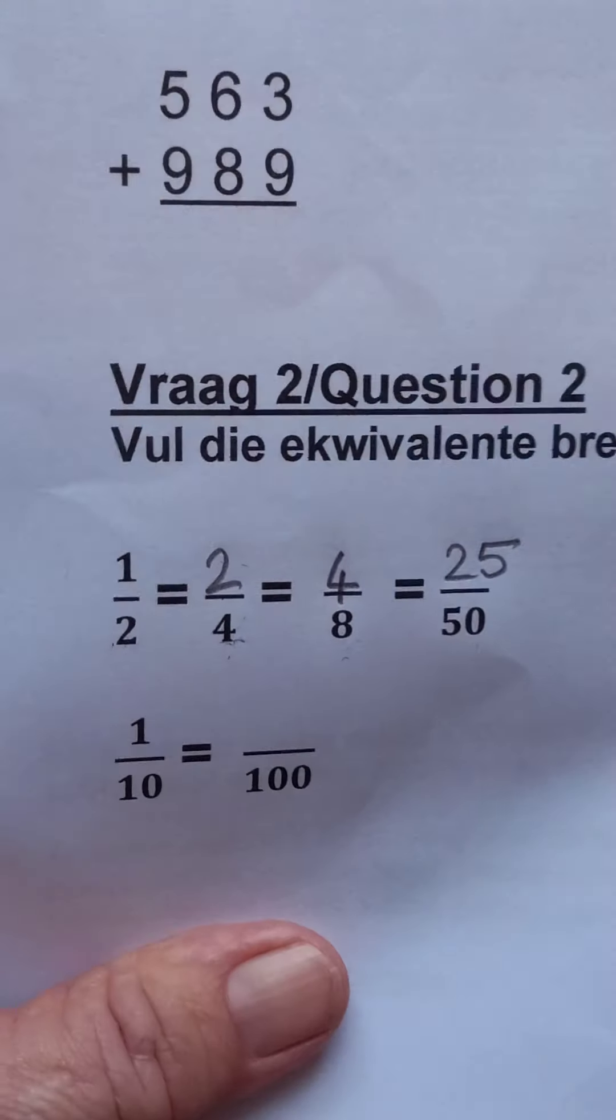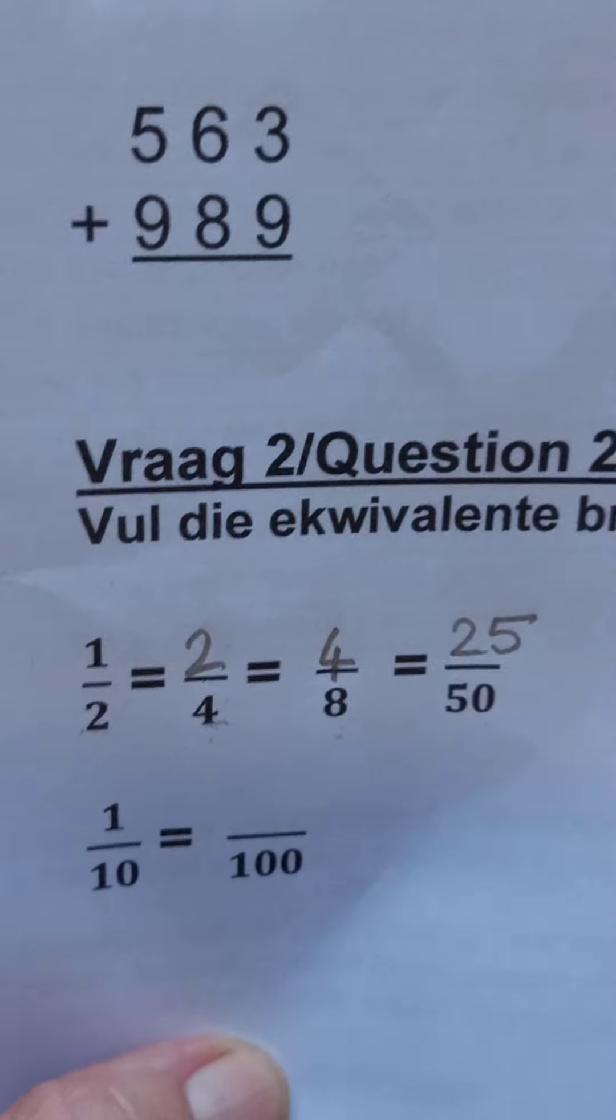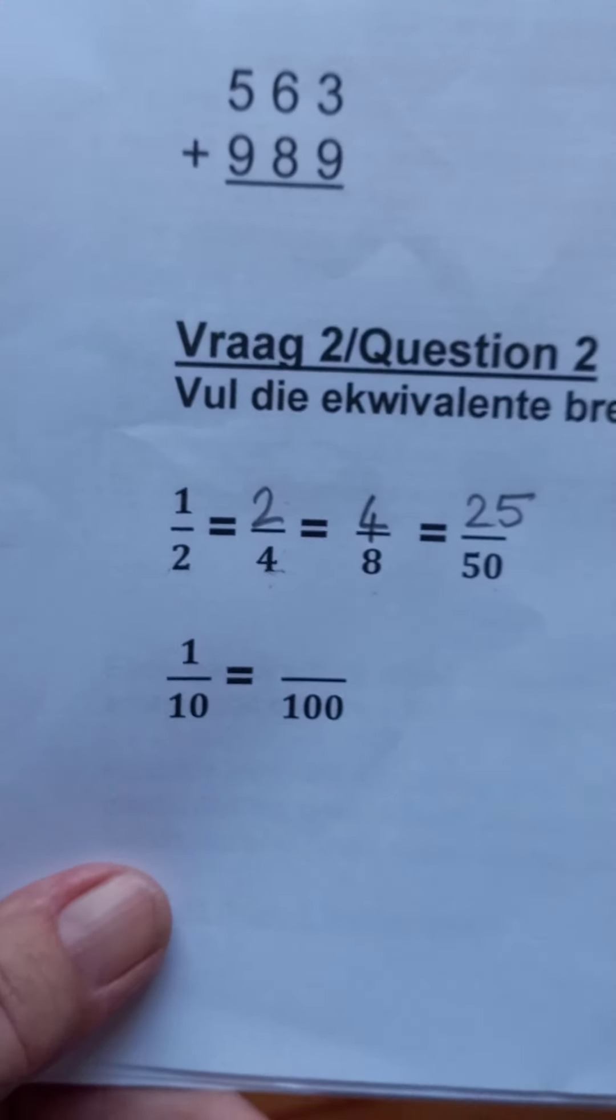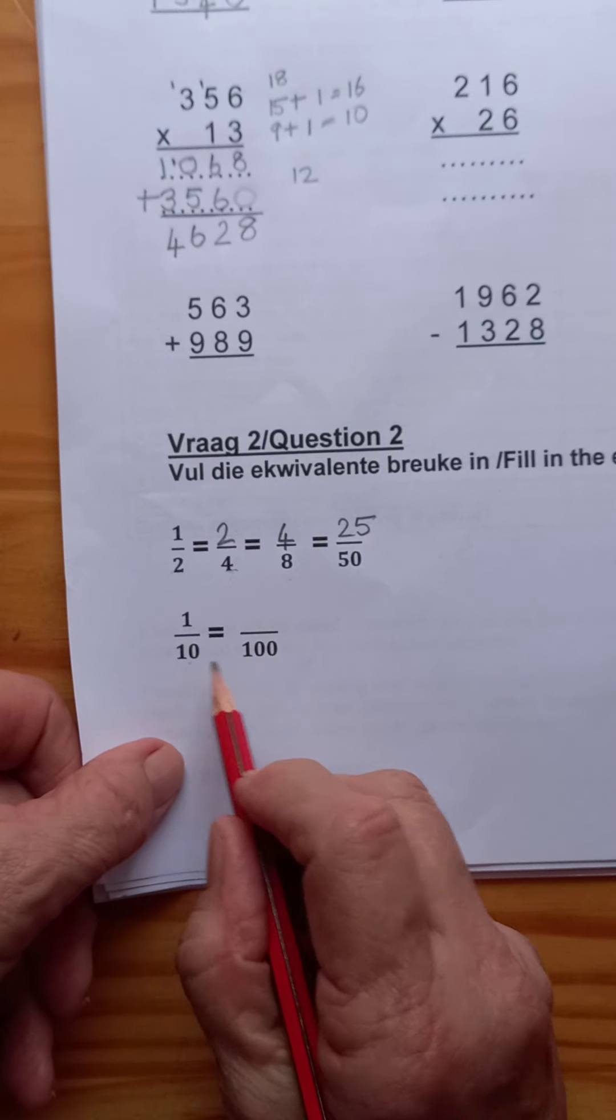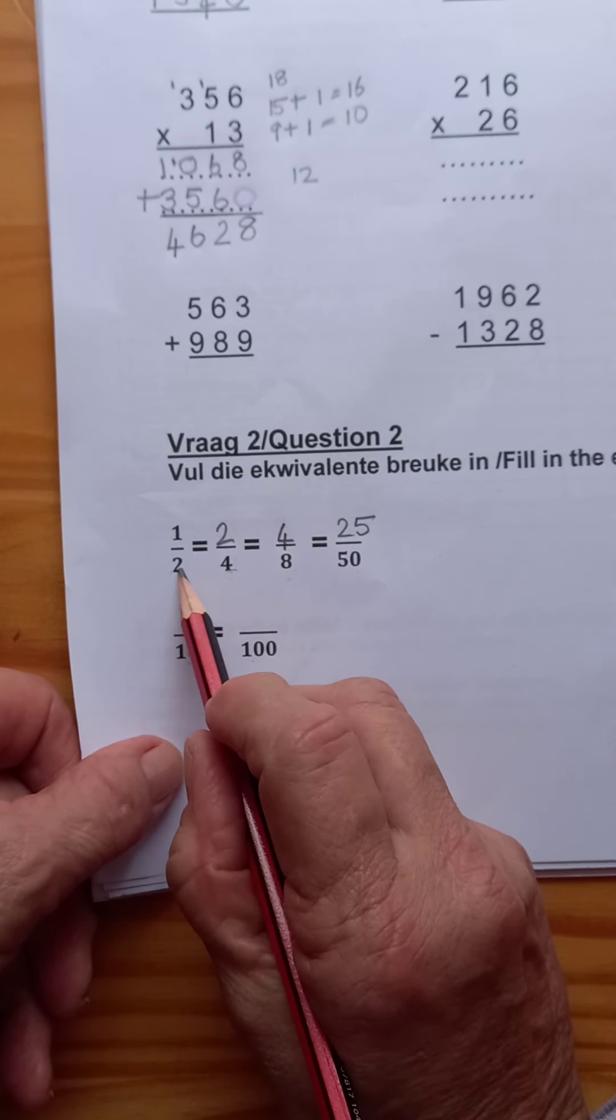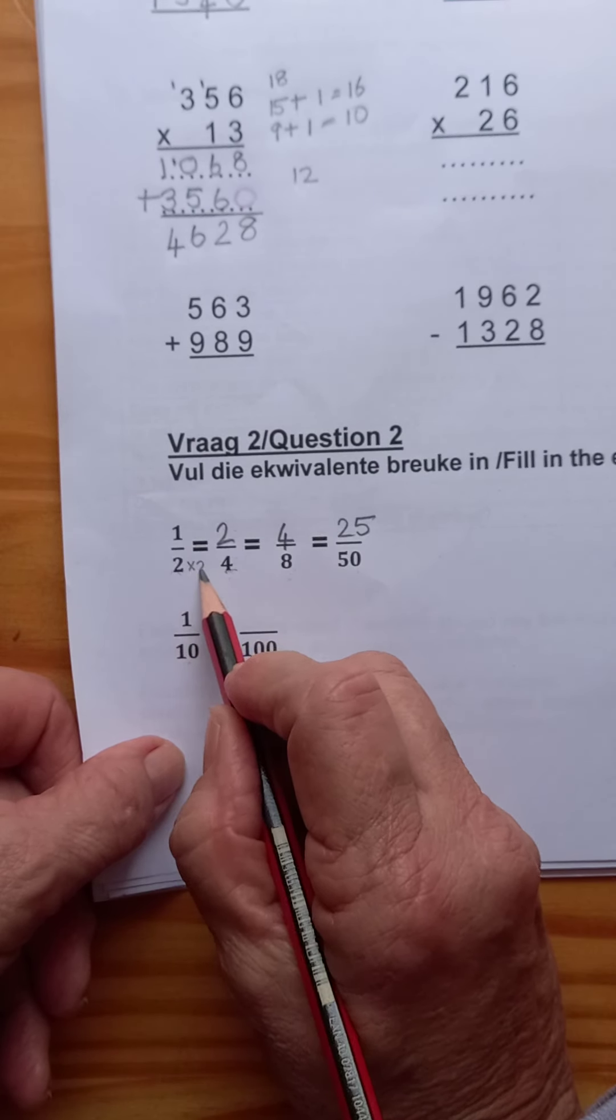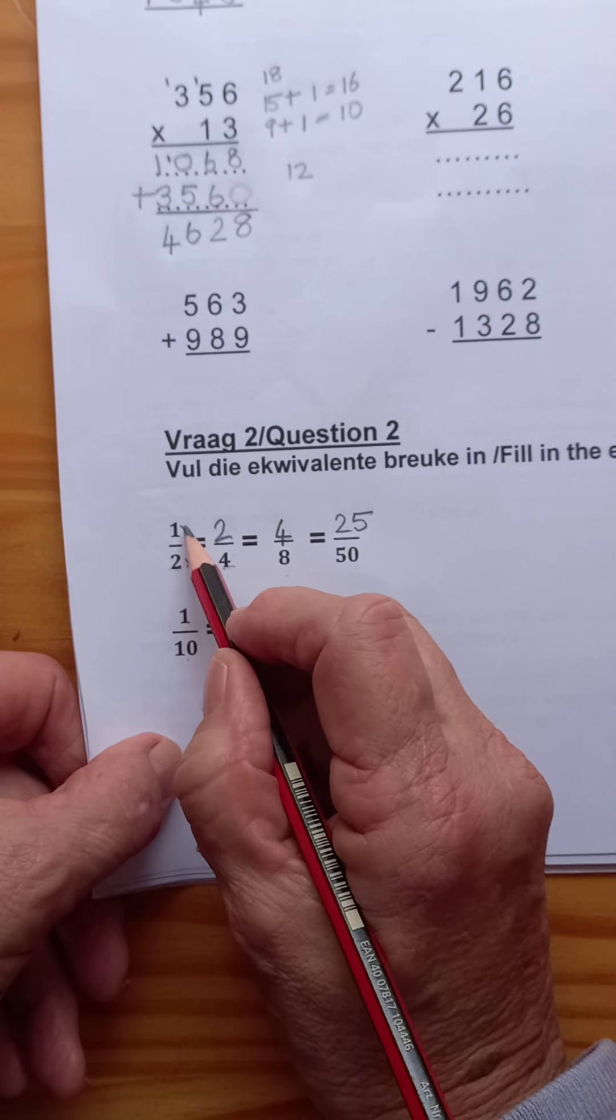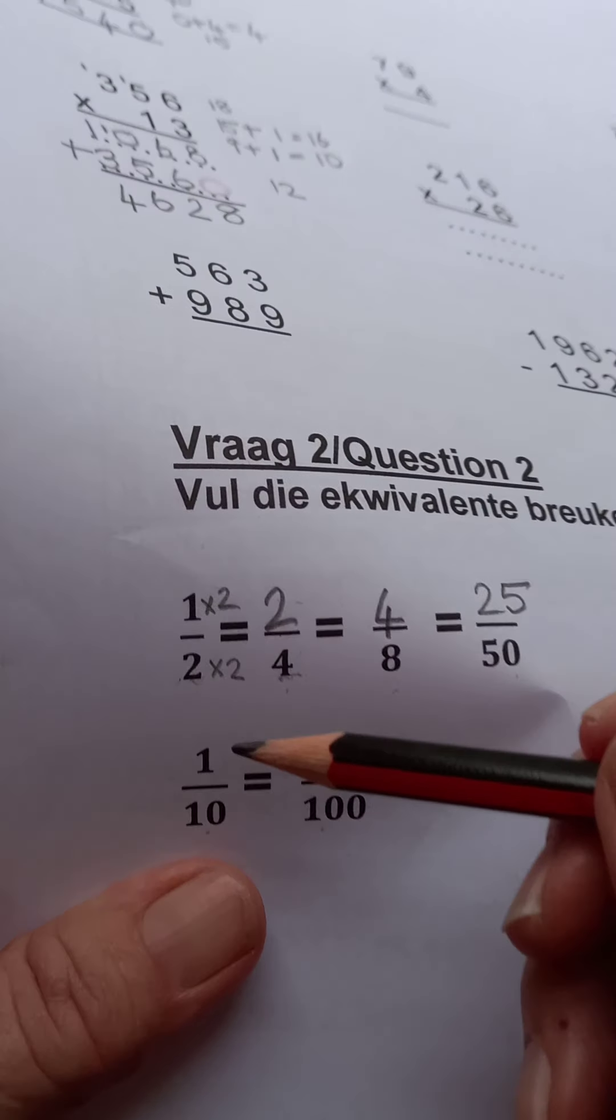Now if you look at this one, it doesn't look easy but you will see, I already told you, what did you do with a two to get four? You timed it by two. So if you have one, then you must do at the top what you did at the bottom.